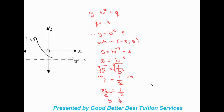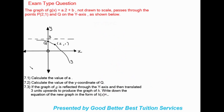So our final equation is y equals one half to the power of x minus 3. Now that we've worked through three examples, let's look at something a bit different — an exam-type question.